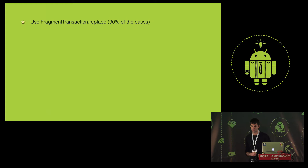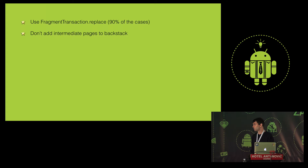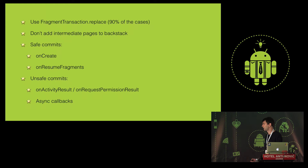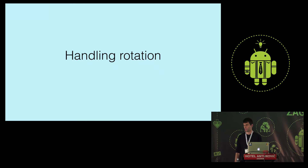A few things recap: use fragment transaction replace in most cases. Don't add intermediate pages to the back stack. Safe commit points are onCreate and onResumeFragments — we saw how to handle unsafe scenarios.